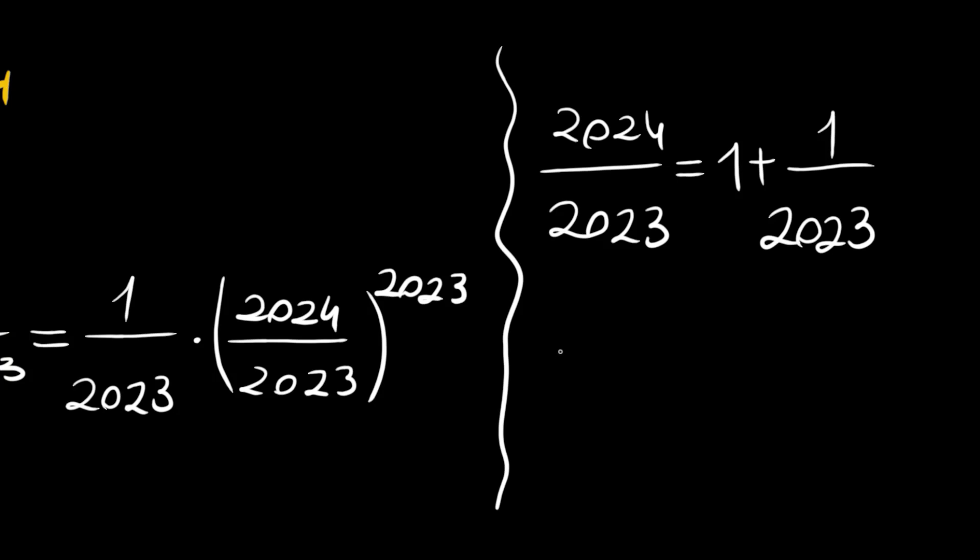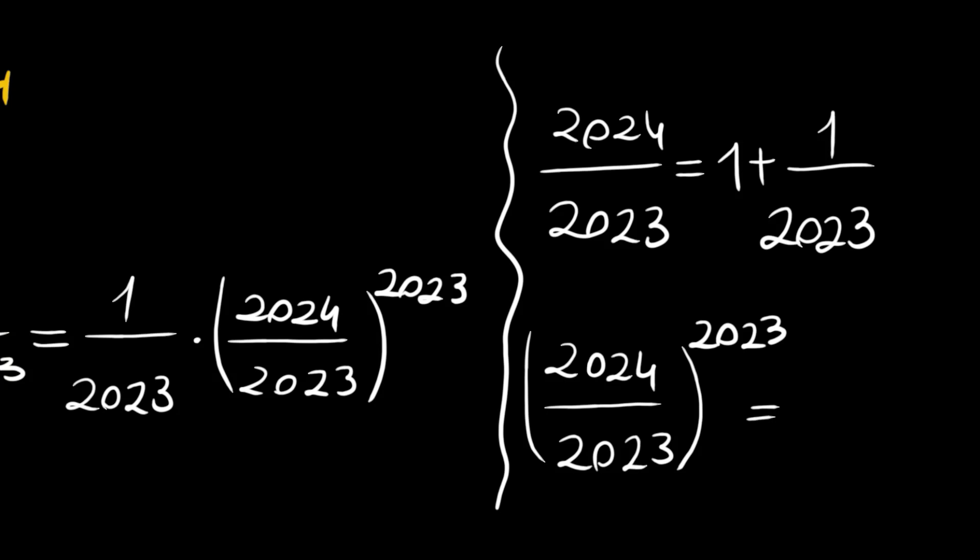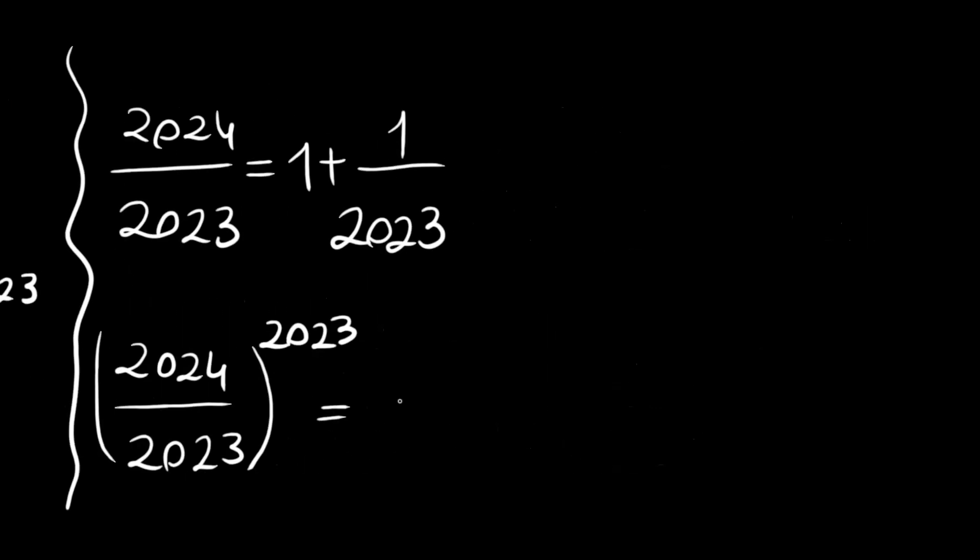And the 2024 divided by 2023 to the power 2023 is now equal to (1 plus 1 divided by 2023) raised to the power 2023. This is very nice since this is like (1 plus 1 over x) all raised to the power x.